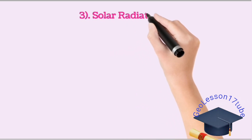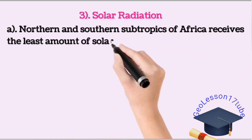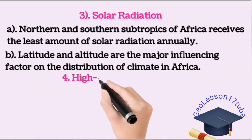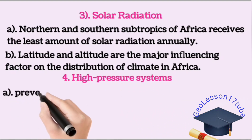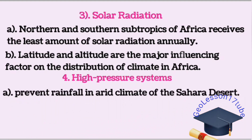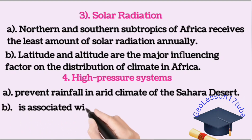Solar radiation: the northern and southern subtropics of Africa receive the least amount of solar radiation annually, and as a result they remain dry. Equatorial low-pressure areas are known for having high solar radiation angles. The region that receives a high angle of the sun becomes warmer.